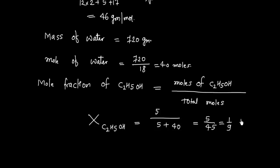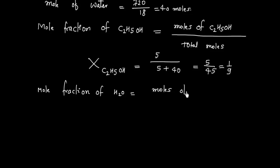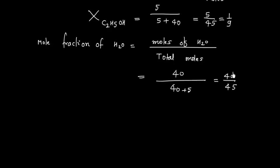Similarly, we can calculate the mole fraction of water (H2O). Mole fraction of H2O equals moles of H2O divided by total moles. Moles of H2O is 40 and total moles is 40 plus 5, so this is 40/45, which equals 8/9. Mole fraction again has no unit.